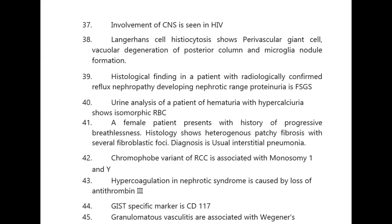Histological finding in a patient with radiologically confirmed reflux nephropathy developing nephrotic range proteinuria is FSGS. Urine analysis of a patient with hematuria and hypercalciuria shows isomorphic RBC.